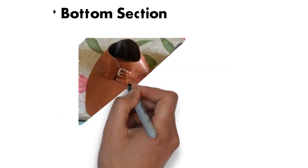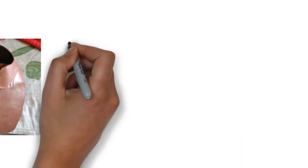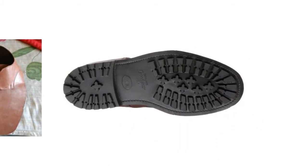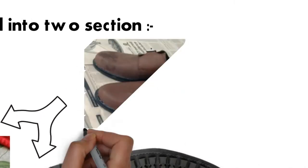The portion of footwear which is in contact to feet from upper side is called upper section. And the portion of footwear which is in contact to feet from bottom side is called bottom section. When upper and bottom sections get lasted then they make full shoes.